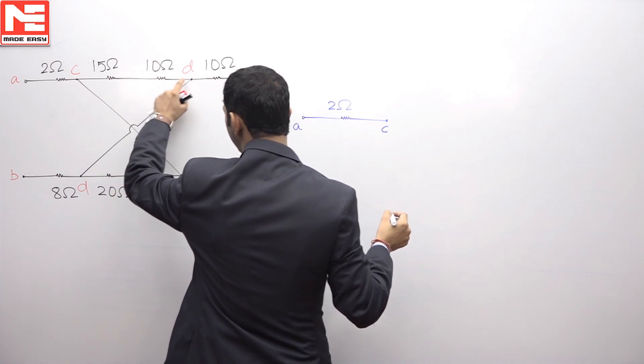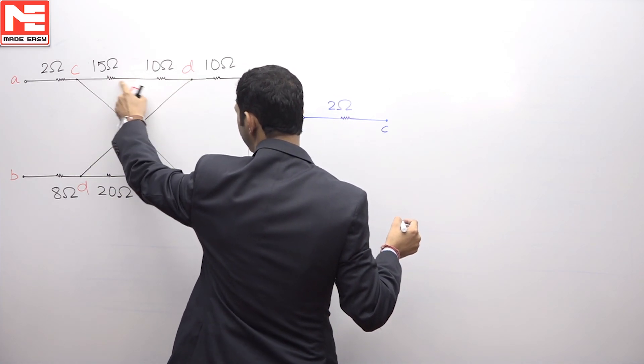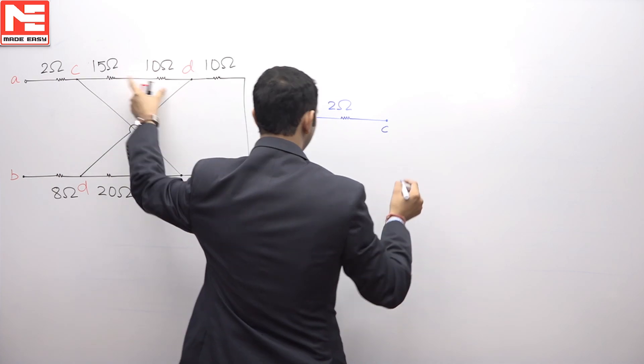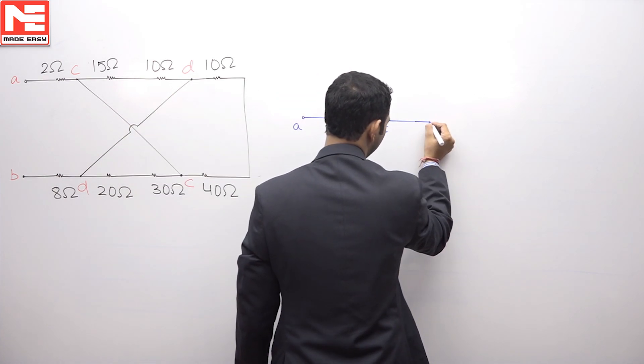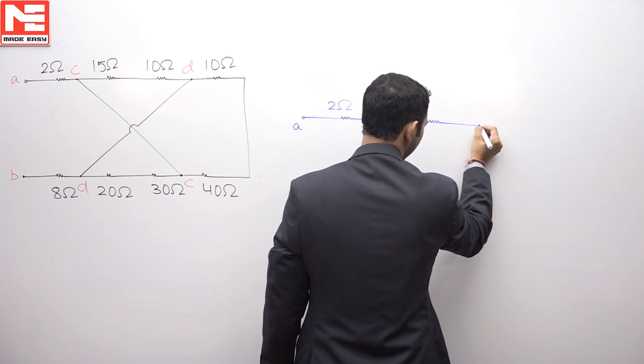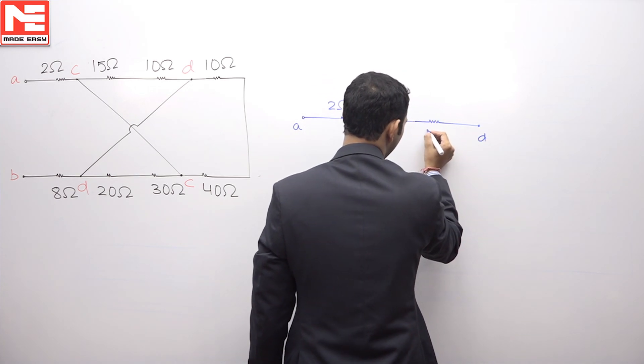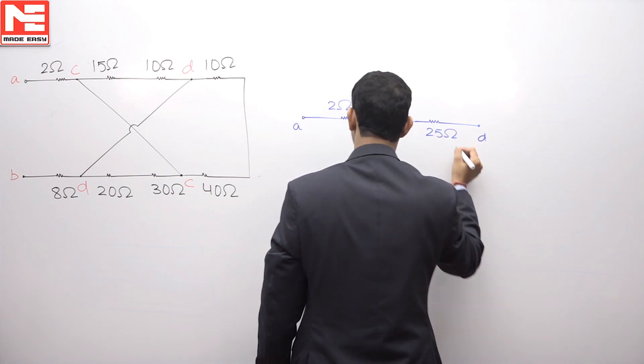Between point C and D, 15 plus 10, as they are connected in series, so they will get added, so 25. So between C and D, 25 ohm is connected.